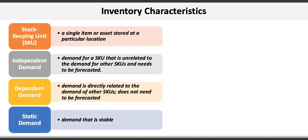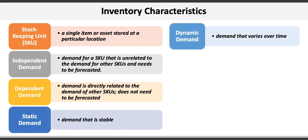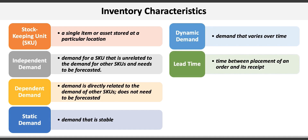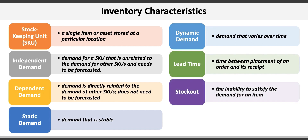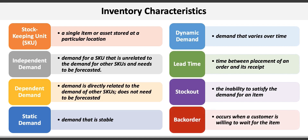Demand can also be either static or dynamic. For example, demand for coffee at Starbucks is generally pretty stable regardless of season. Conversely, dynamic demand varies over time — for example, demand for cold frappuccinos at Starbucks varies based on season. In inventory problems we also need to know the lead time, which is the time between placement of an order and its receipt. If a store runs out of an item it experiences a stockout, and stocked-out items go on back order if a customer is willing to wait.